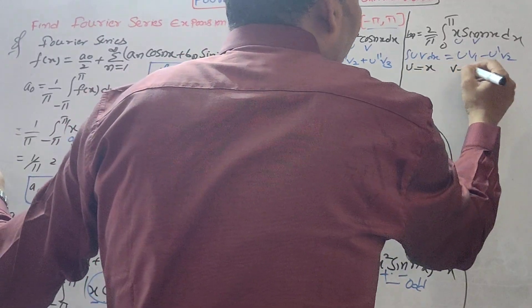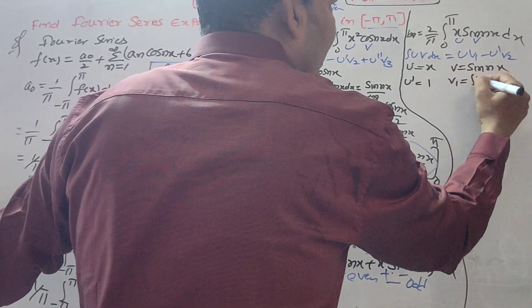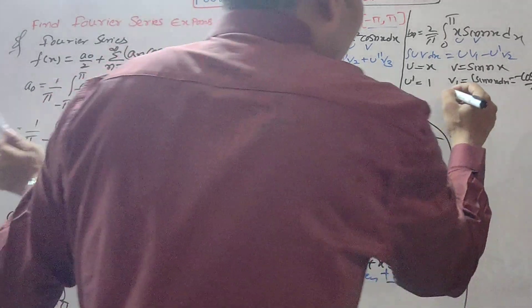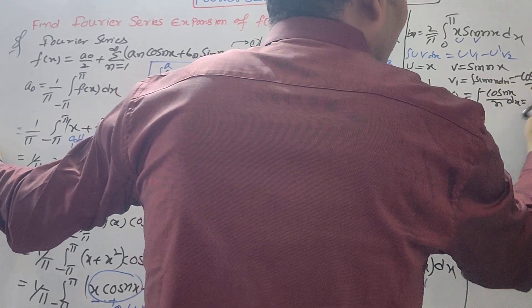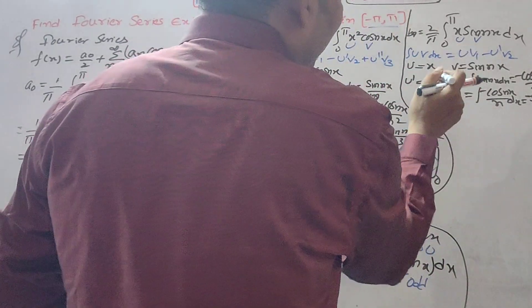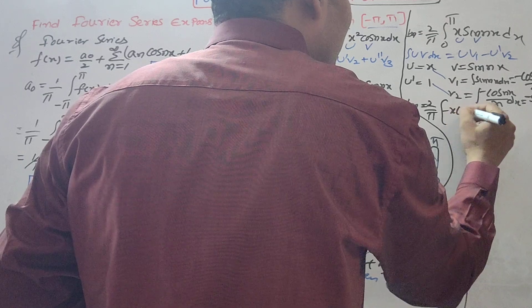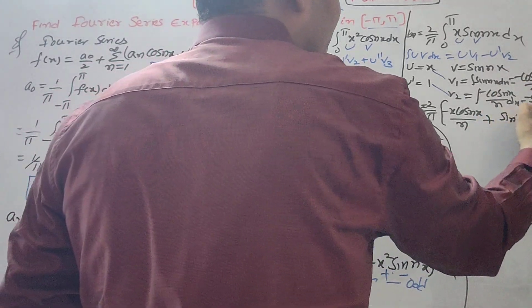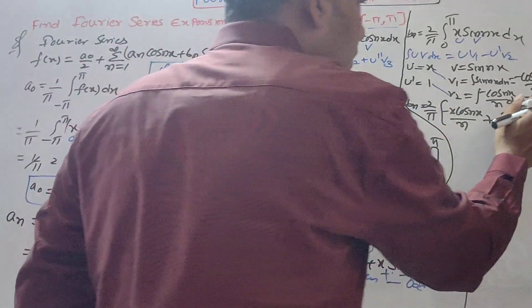So bₙ = 2/π integral from 0 to π of x sin nx dx. Take x as u and sin nx as v. u' = 1, v₁ = -cos nx/n, v₂ = sin nx/n². Using the formula uv₁ - u'v₂, we get 2/π[-x cos nx/n + sin nx/n²] from 0 to π.